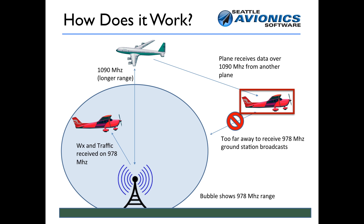If you're too far from a ground station but happen to have a dual channel receiver, you receive traffic information from 1090 megahertz. You're too far away to get anything from the 978 frequency, but you will get traffic, in some cases, that's being rebroadcast by commercial airliners and corporate jets flying overhead. In that case, you won't receive any weather information.